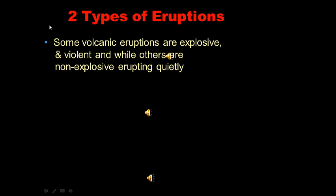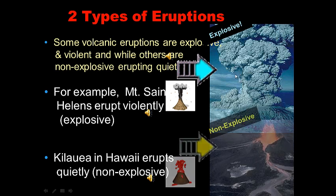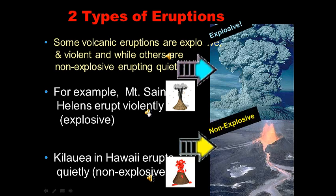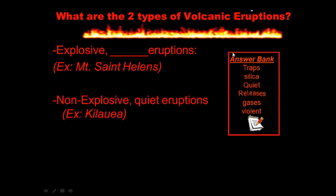There are two types of eruptions: some are explosive and violent, like Mount St. Helens, which was deadly and explosive, killing about 60 people even after geologists warned people to evacuate. Others are non-explosive, like Hawaii, which just quietly bubbles like a hot tub. Question on the left, answer on the right.